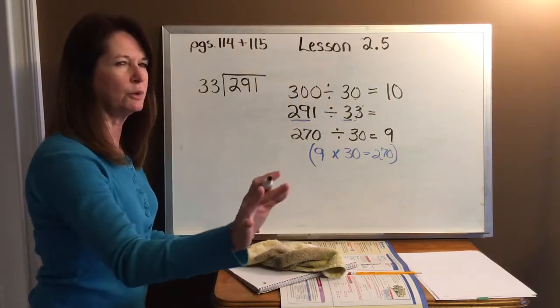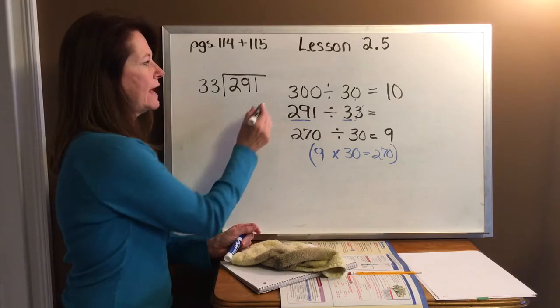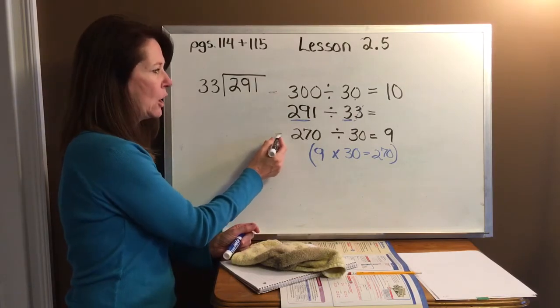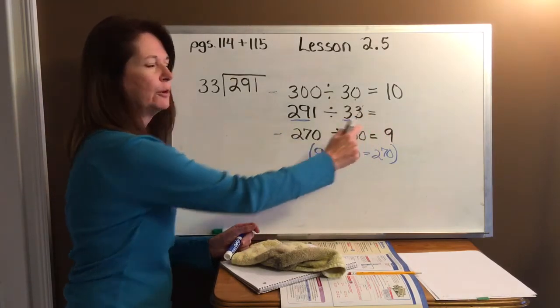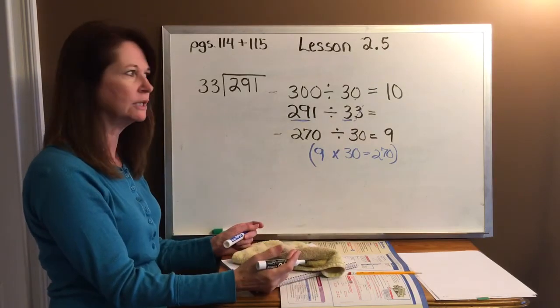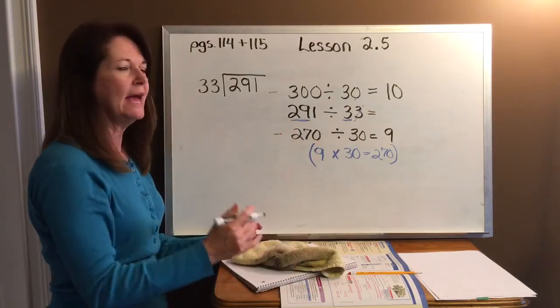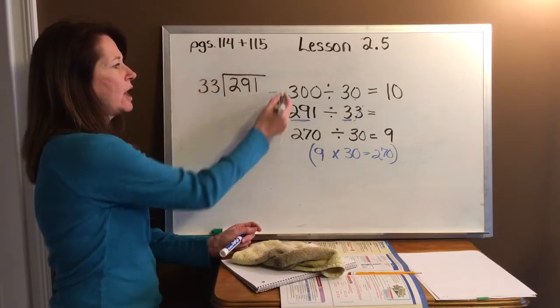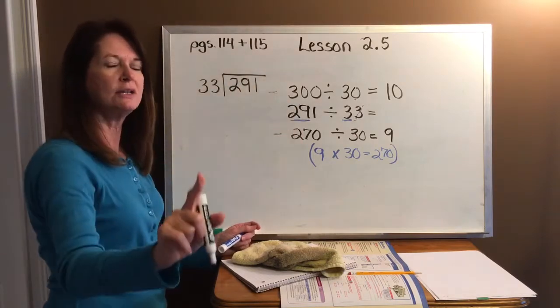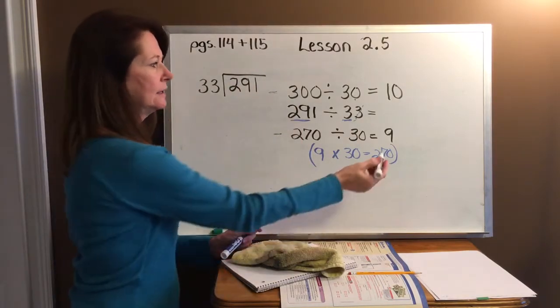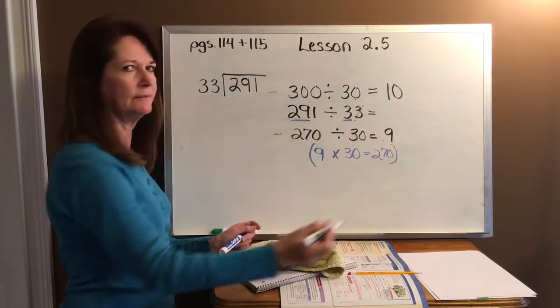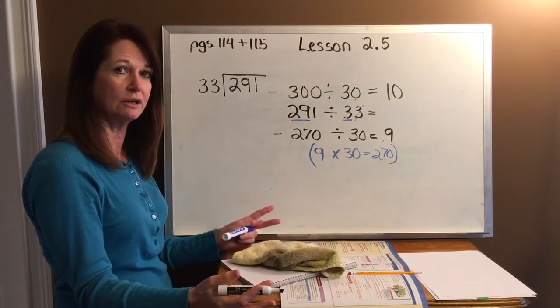So in other words, here's what we found. We've estimated high. We've estimated low for my answer, for my quotient of this division problem. And I know that when I work this problem out right here, my answer will be between nine and 10. That's the conclusion here.